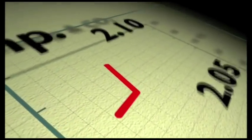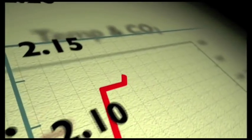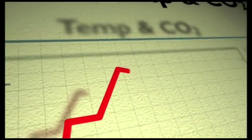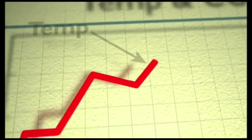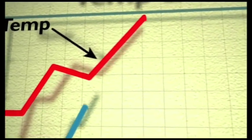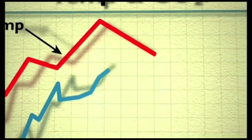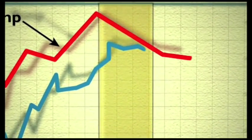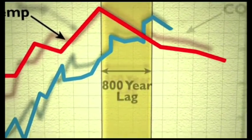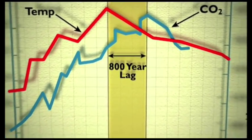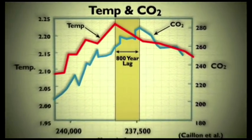we see temperature going up from early time to later time at a very key interval when we came out of a glaciation. We see the temperature going up, and then we see the CO2 coming up. CO2 lags behind that increase. It's got an 800-year lag. So temperature is leading CO2 by 800 years.